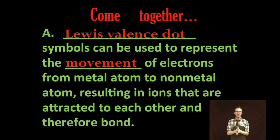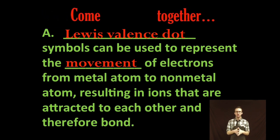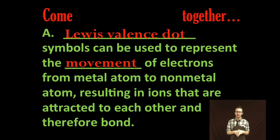Now a big part of what you have to do with ionic bonding is represent those bonds using Lewis valence dot symbols. And we can use these Lewis valence dot symbols to represent the movement of electrons from metal atoms to non-metal atoms resulting in ions that are attracted to each other and therefore bond.